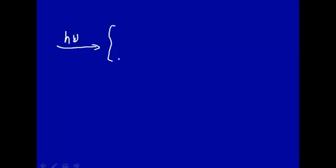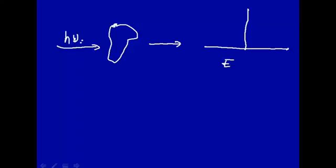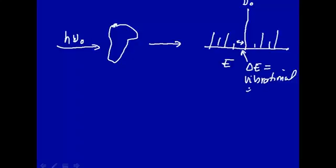Let's just see what we mean by that. Here is light coming in, h-nu, at a particular frequency. Here's our sample molecule, and the light coming out we're going to put through a monochromator. What we'll find if we look at the spectrum — energy on this axis — is that we get the light at the same frequency coming in, h-nu-0, the light that just went right through the sample. But you'll also find some lines on one side and the mirror image on the other side, and these differences in energy, delta-E, which corresponds to a difference in frequency, is related to the vibrational energy levels.